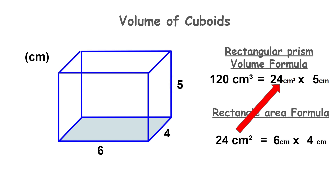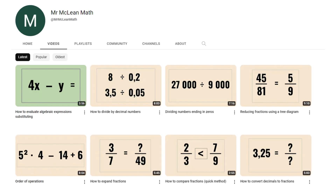24 square centimeters multiplied by five centimeters gives us the volume of 120 centimeters cubed. So 120 centimeters cubed is the volume of our rectangular prism, and this is how we calculate the volume of cuboids. We'll see you next time.